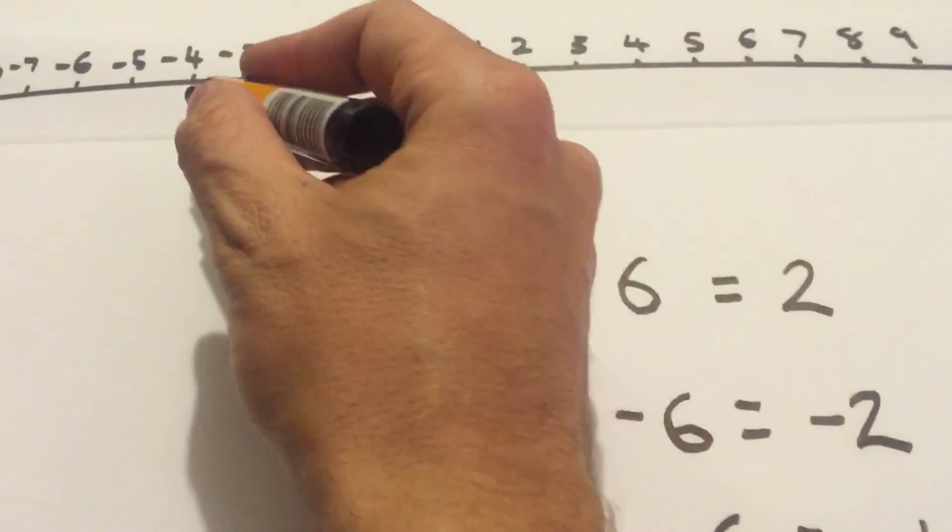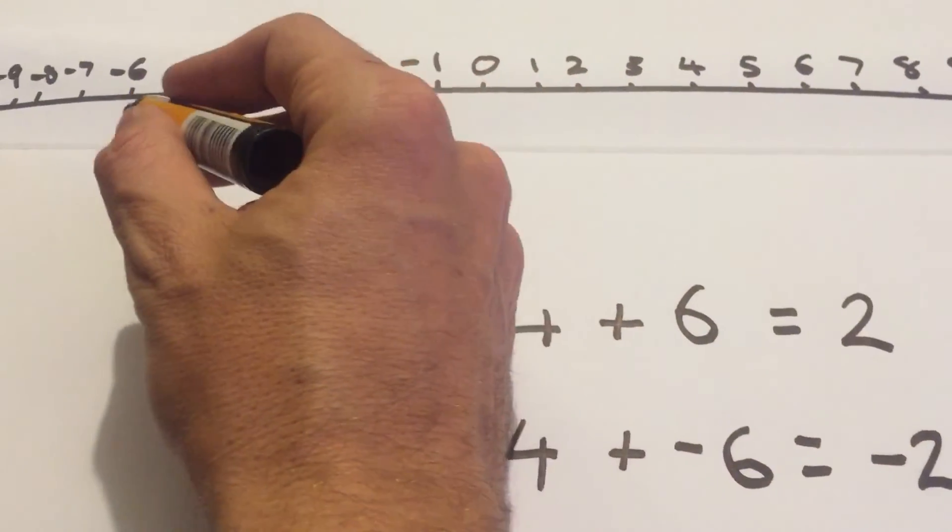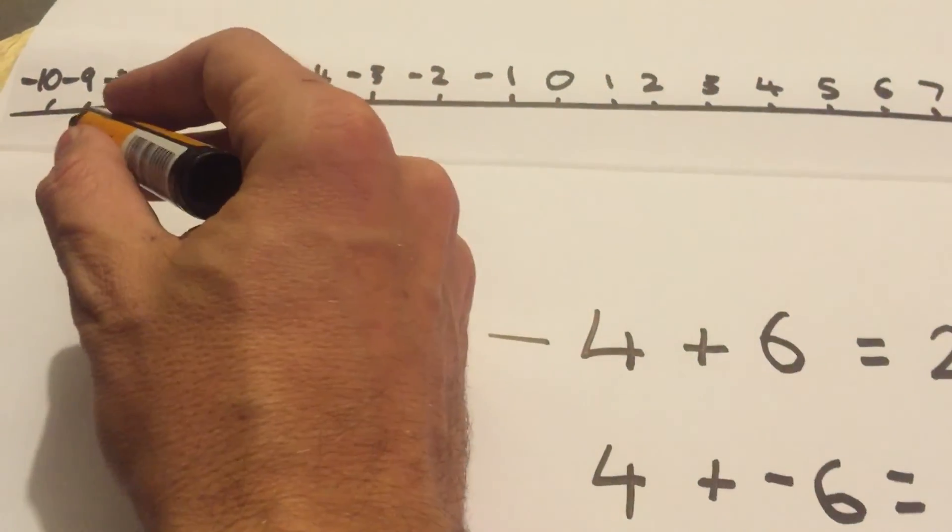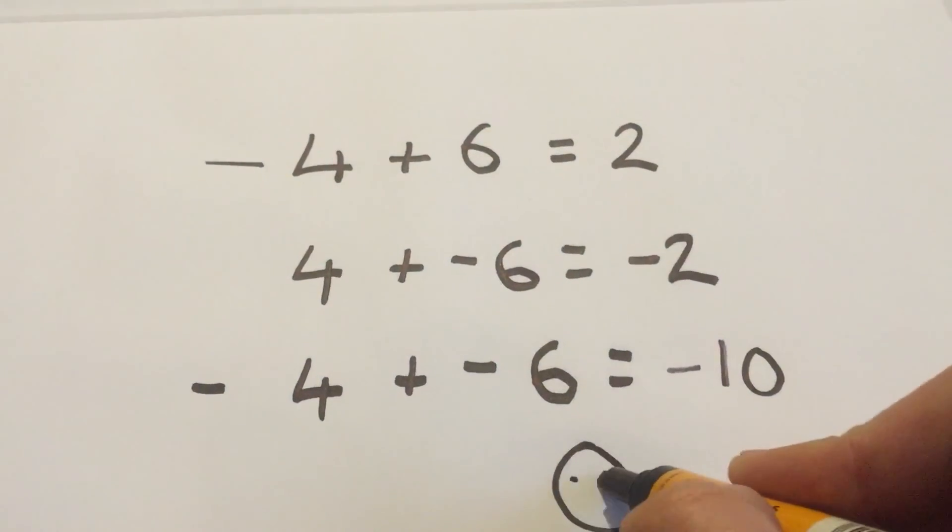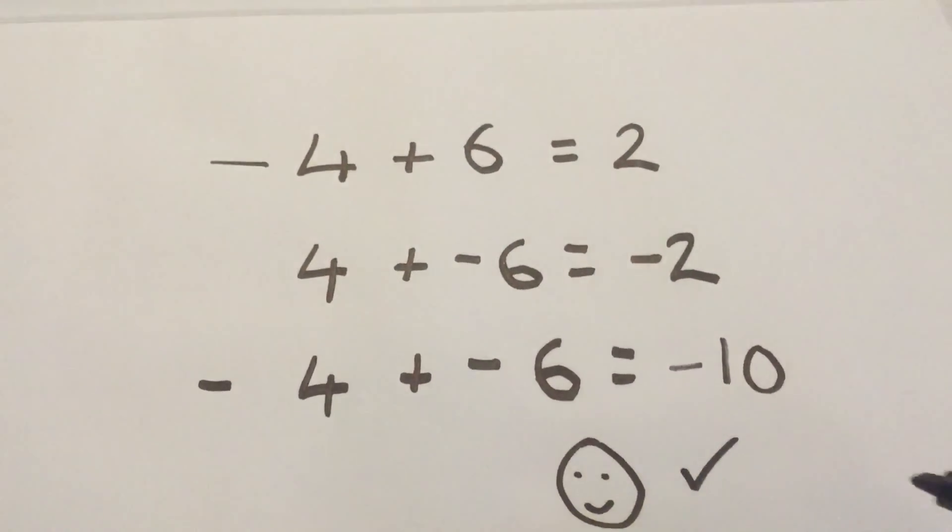And again, you just count back from negative 4, 6 spaces. 1, 2, 3, 4, 5, 6. And that's it.